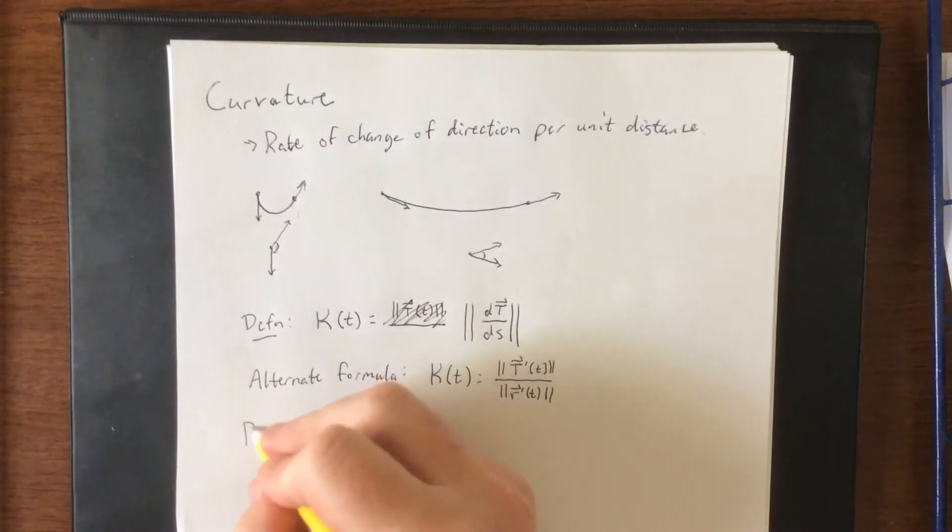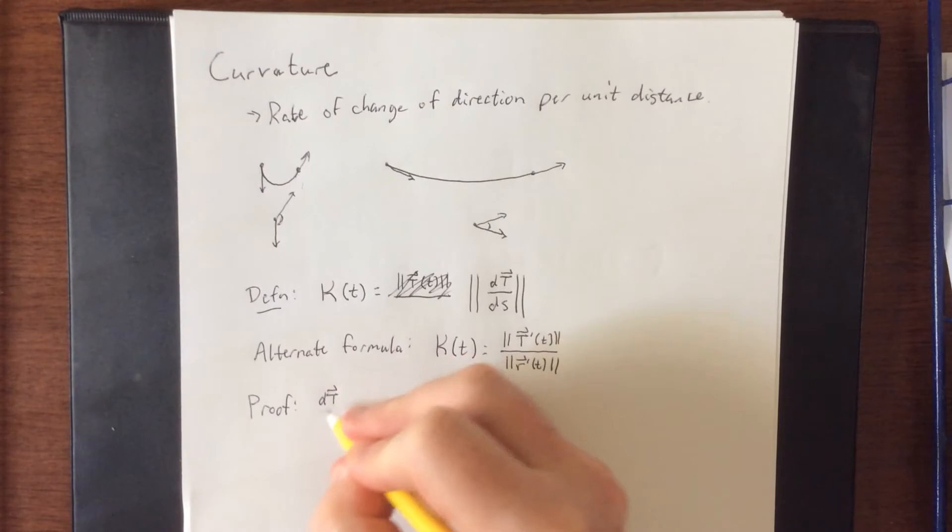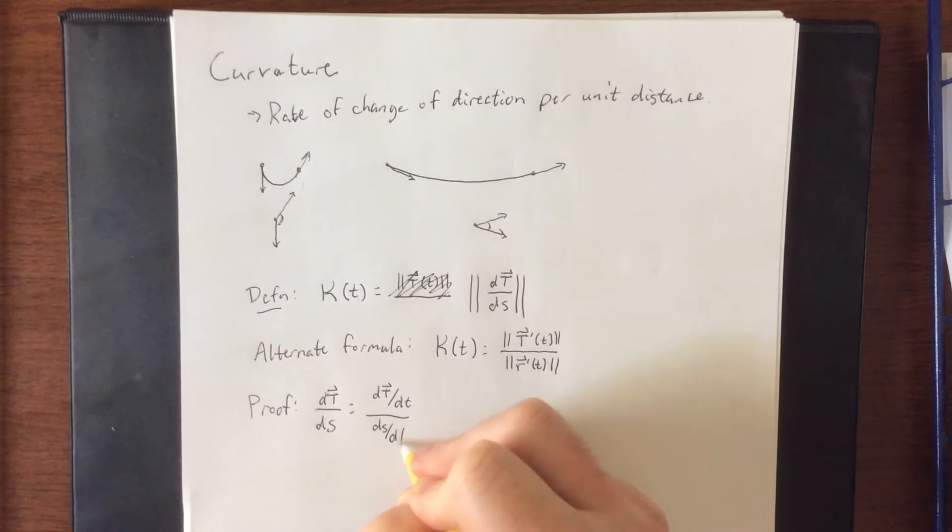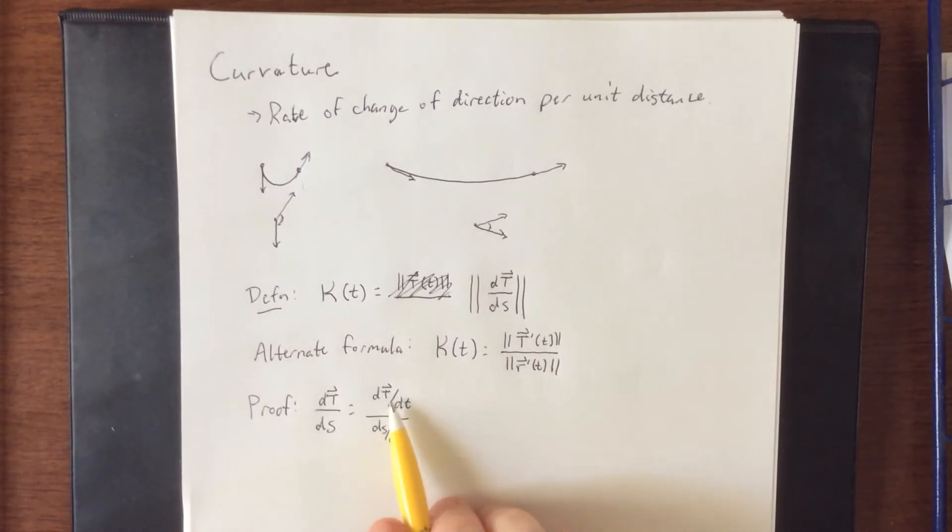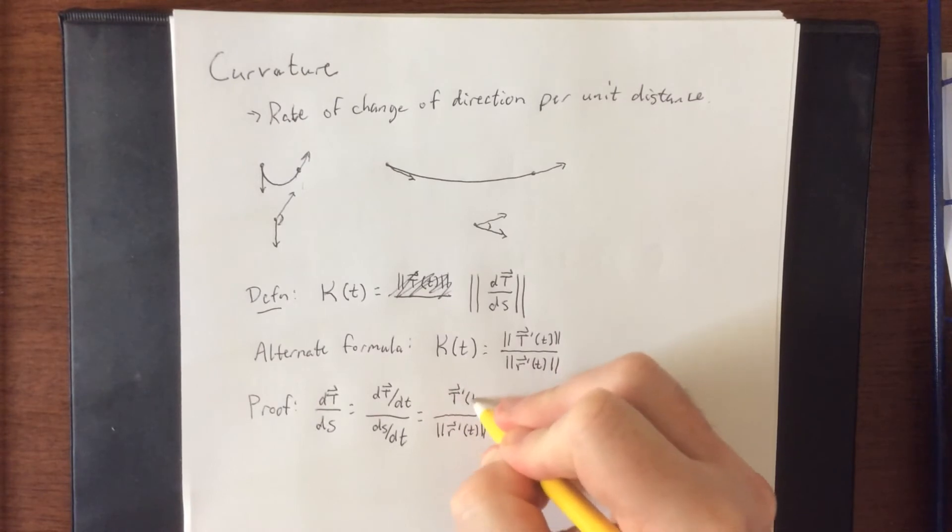We know that we can express the unit tangent vector as a function of time, and we can express s as a function of time as well. The derivative of T with respect to s, according to the chain rule, is the derivative of the unit tangent vector with respect to t over the derivative of arc length with respect to t. However, we also showed in a previous video that ds/dt, according to the fundamental theorem of calculus part one, is the same as the magnitude of r prime of t.